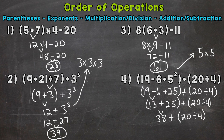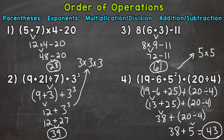Do we have any parentheses? Yes — we have that 20 divided by 4. So that comes next. 20 divided by 4 is 5. Bring down everything we did not use. We end with addition: 38 plus 5, which equals 43. So our final answer for number 4 is 43.